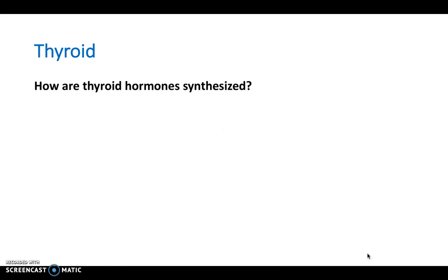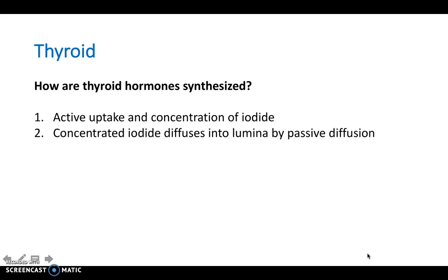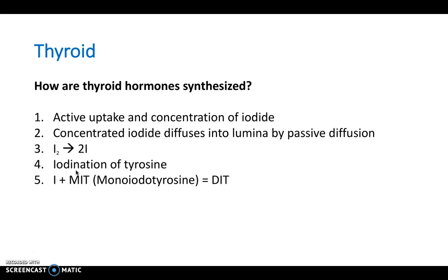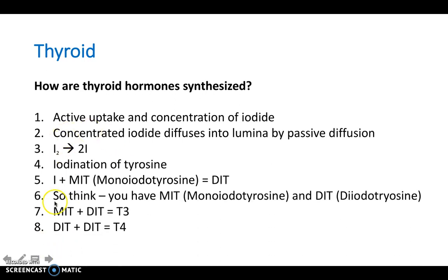How are thyroid hormones synthesized? It's a complicated system, but step by step it's manageable. First, there is active uptake and concentration of iodide from the diet. This iodide then diffuses into the lumen by passive diffusion. We then have iodide becoming two iodine molecules. Next is the iodination of tyrosine — one of the 20 standard amino acids used to synthesize proteins. You can either have MIT (monoiodotyrosine), where one iodine is bound to tyrosine, or DIT (diiodotyrosine), where two iodines are bound to tyrosine.